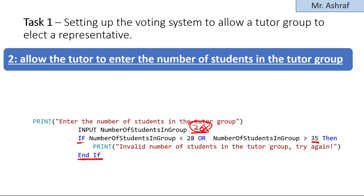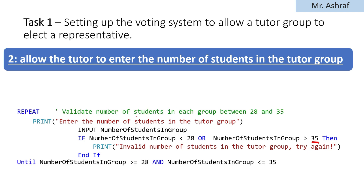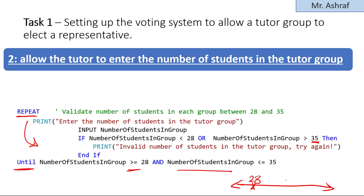Since the system should not allow the user to proceed until a valid number is entered, we use a loop structure — REPEAT...UNTIL. REPEAT all the input statements UNTIL NumberOfStudentsInGroup >= 28 AND NumberOfStudentsInGroup <= 35. Think of it as a number line: the number of students must be between 28 and 35; anything outside that range is not accepted.